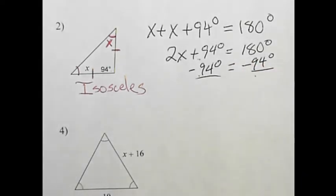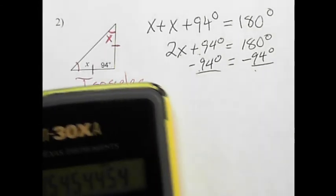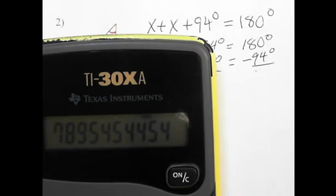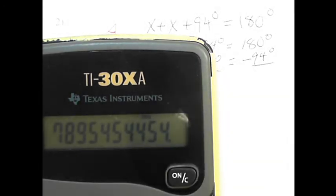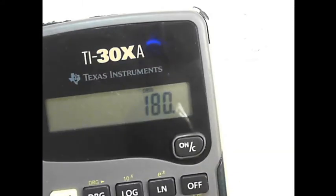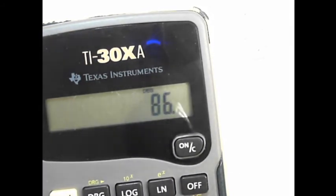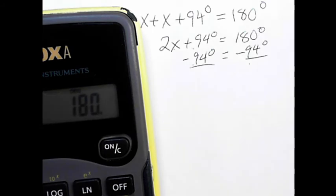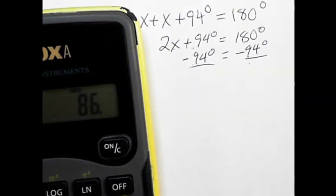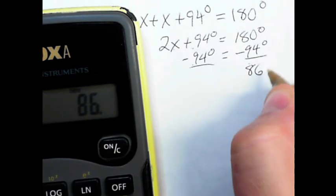I'm going to take out my handy-dandy calculator. I could probably do this in my head, but because I want to make sure I get it right, I'm going to calculate 180 minus 94. That's 86 degrees. Let me check that one more time: 180 minus 94 equals 86 degrees.